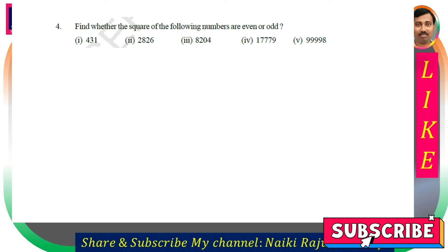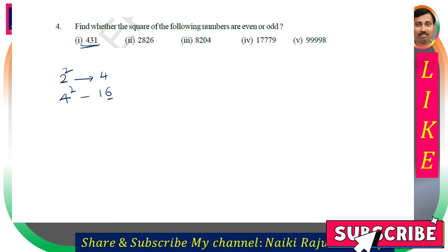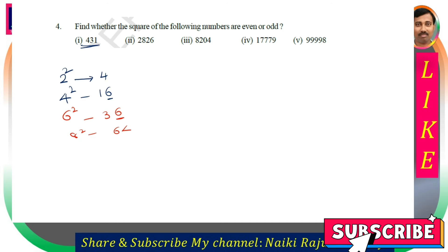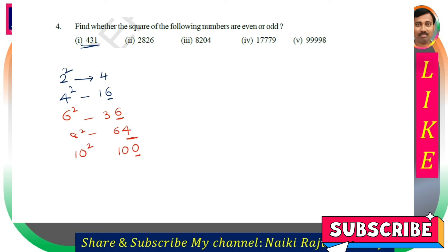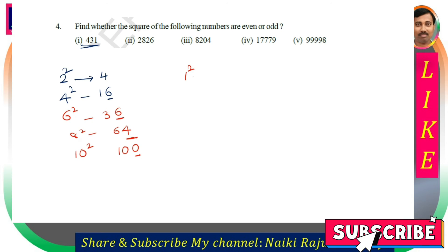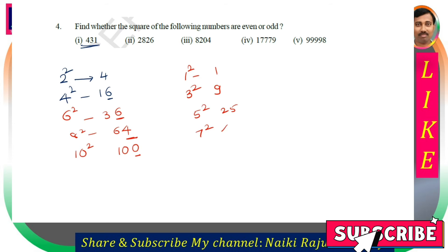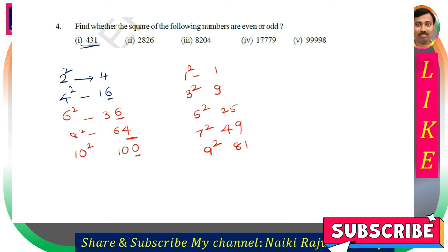Find whether the square of the following numbers are even or odd. Observe: 2 square 4 (even), 4 square 16 (even), 6 square 36 (even), 8 square 64 (even), 10 square 100 (even). So the square of an even number is always even. For odd numbers: 1 square 1, 3 square 9, 5 square 25, 7 square 49, 9 square 81. The square of an odd number is always an odd number.